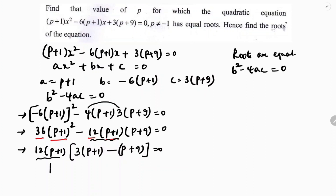Equating (p+1) = 0 gives p = -1, but they said this is not the answer. Because if p = -1, then -1+1 = 0, so the coefficient of x² becomes 0 and there would be no x² term. So p = -1 is not a valid solution.